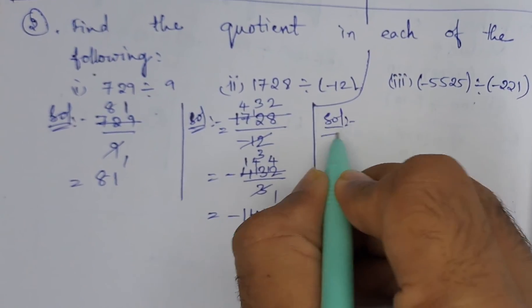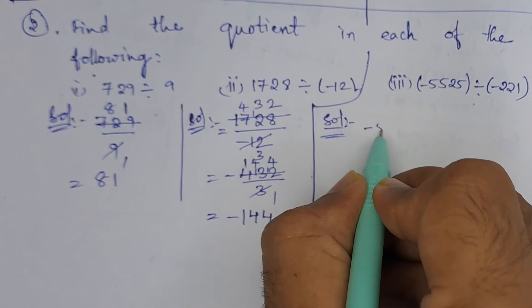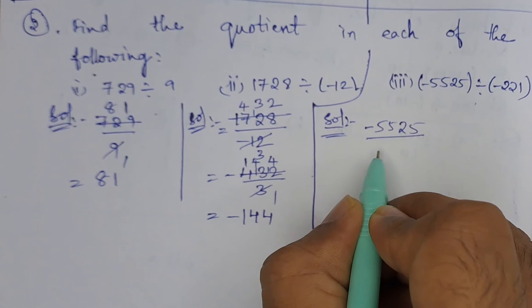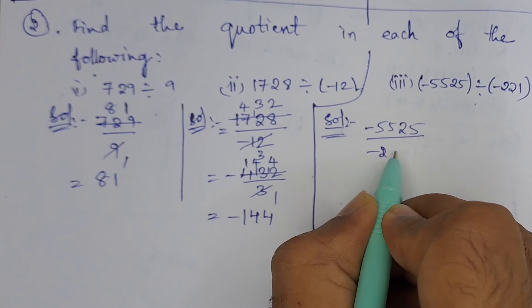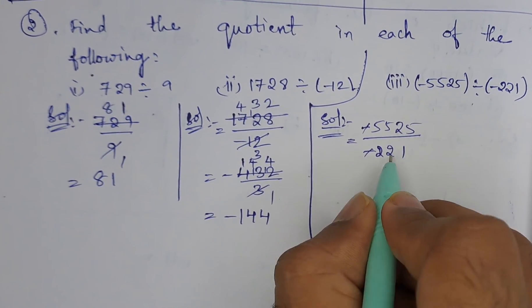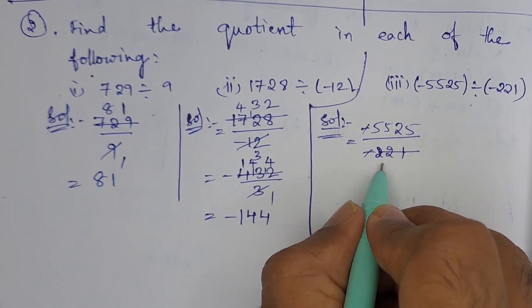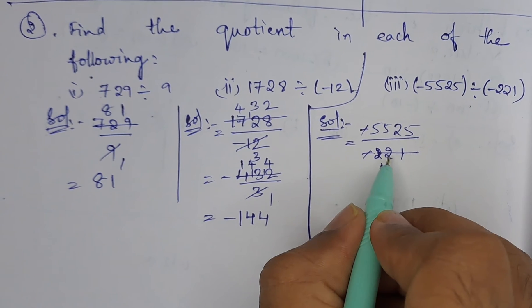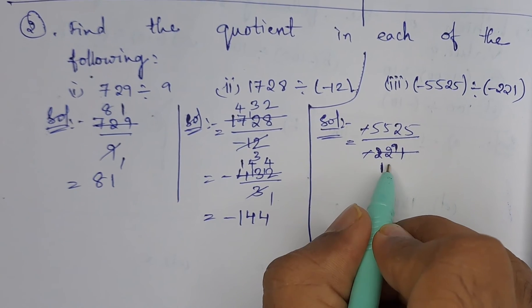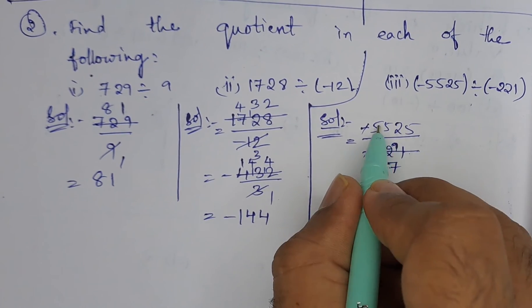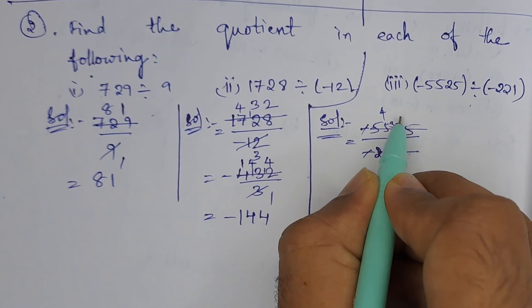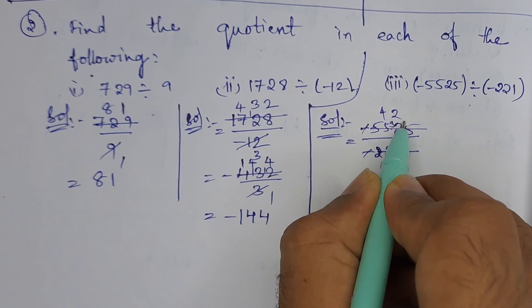In the third bit we are having minus 55525 divided by minus 221. We can cancel this minus. Now 13 ones are 13, the remaining number is 9 left. So 13 sevens are 91. 13 fours are 52, 3 left. 13 twos are 26, 8 left.